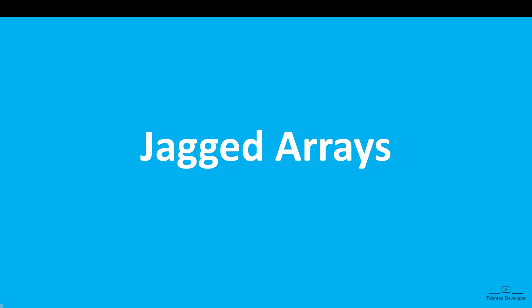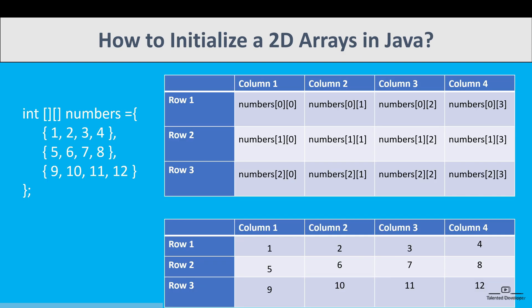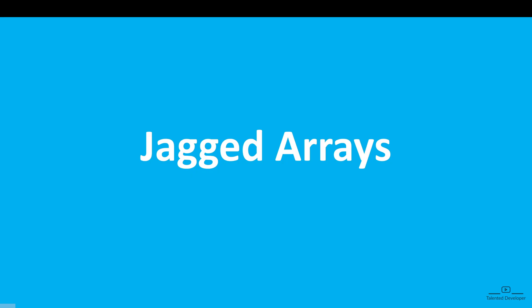Hello and welcome back to our Java tutorial series. In the last video we explored multi-dimensional arrays and how they help us organize data in rows and columns. But what if each row has a different number of elements? Currently we have seen fixed data in rows and columns, but what if each row has a different number of elements?